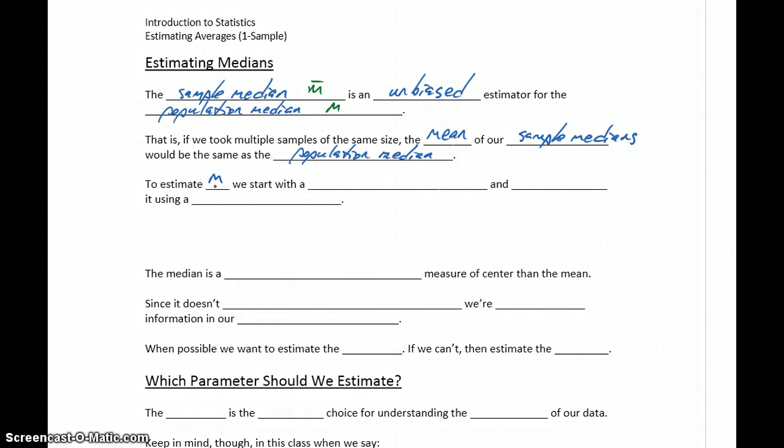So to estimate the population median, we'll start with a point estimate, which will be our sample median, M bar, and then again we'll be stretching that value using a margin of error.